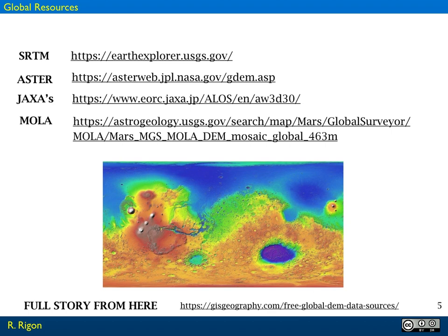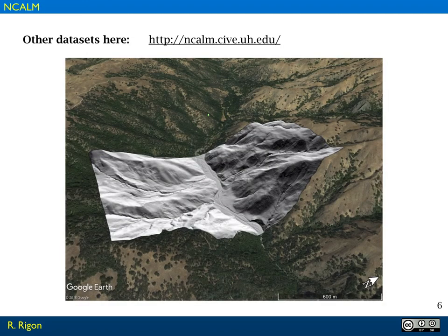If you want a short story, but the full story for these datasets, you can also go to the link that you see below. There are several institutions around the world that produce free datasets of DEMs, and NCALM is one of these institutions, which is actually a joint project between Houston University and Berkeley University in the United States. Here you see an image at high resolution over the Google Earth engine. If you have questions, please write to me and I will be happy to answer.